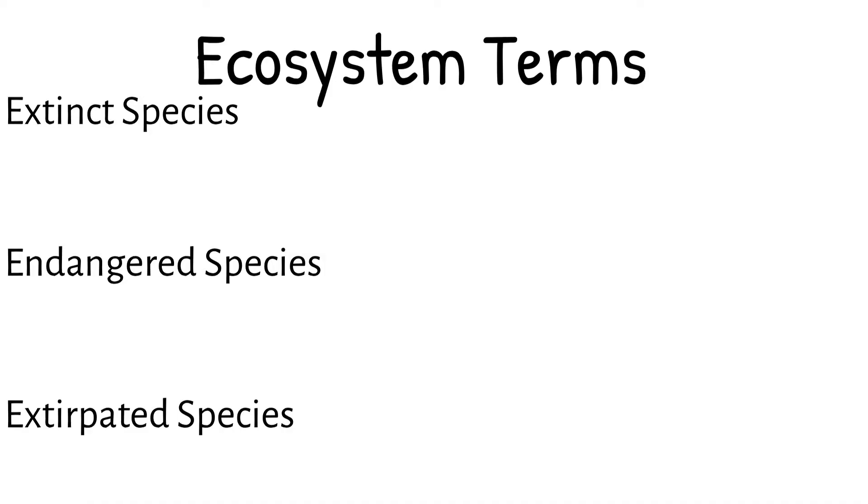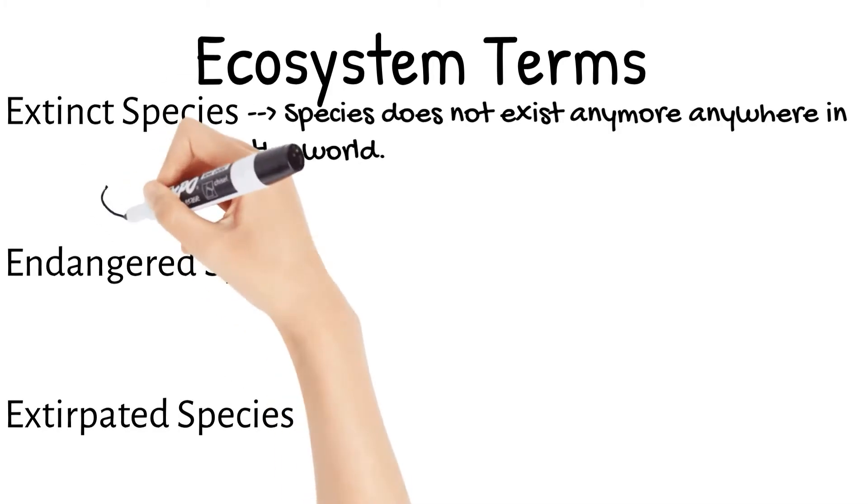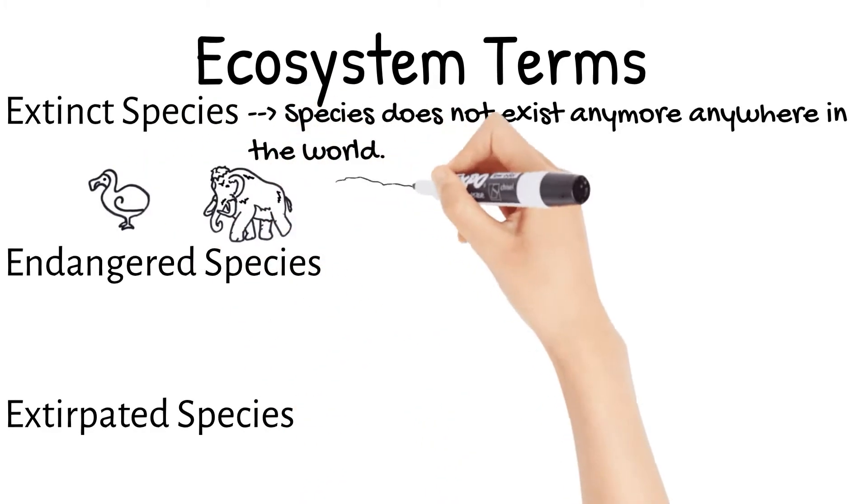Extinct species are those that don't exist anymore anywhere in the world. A species may become extinct because of loss of their home, their food source, pollution, an invasive species competing with them, and so on. Examples of extinct species are the dodo bird, woolly mammoth, and saber-toothed tiger.